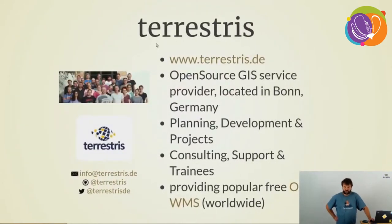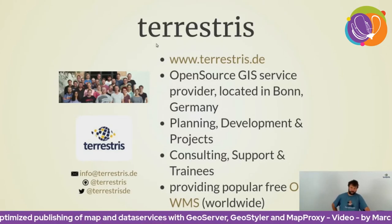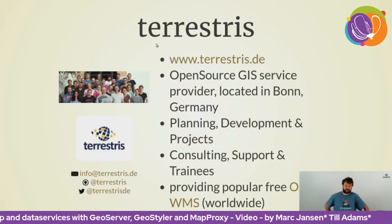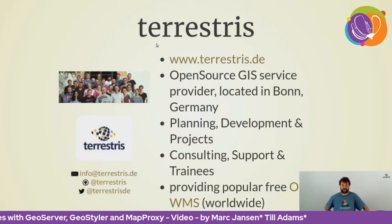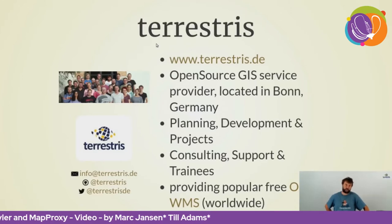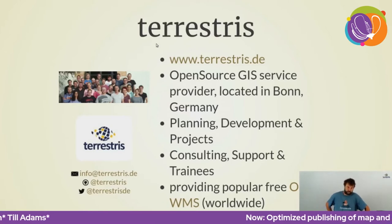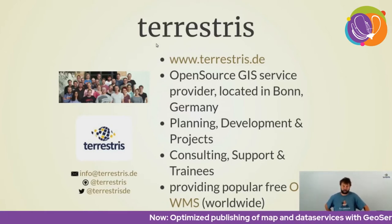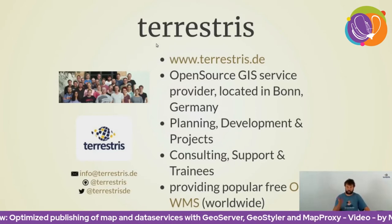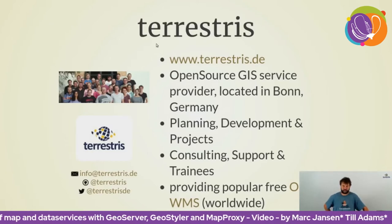Terrestris is an open source GIS service provider located in Bonn, Germany, started in 2002 with a focus on open source software from the very beginning. Their main business is planning and development of projects, but they also do consulting, support, and training. They also provide a now very popular free OpenStreetMap-based WMS service that is worldwide — which will be shown as the example later.